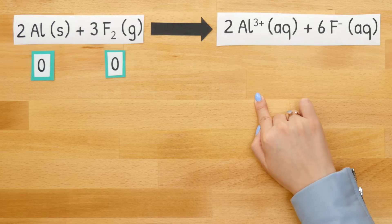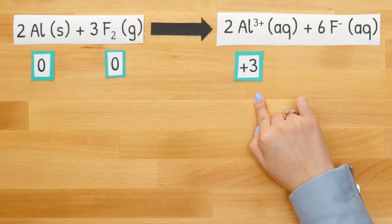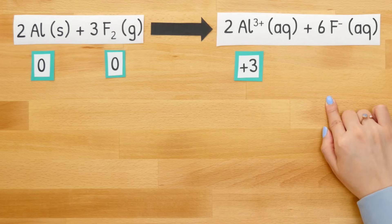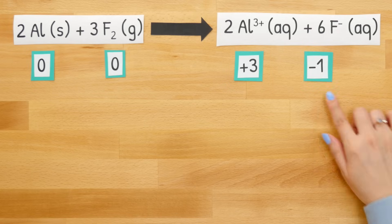Moving on to aluminum in the product — now aluminum has a 3+ charge. If it has a charge, then for one element with a charge, the oxidation number will be the charge. That's why our oxidation number here is plus 3. Lastly, fluorine has a negative 1 charge, so once again that oxidation number would be its charge — in this case our oxidation number is negative 1.